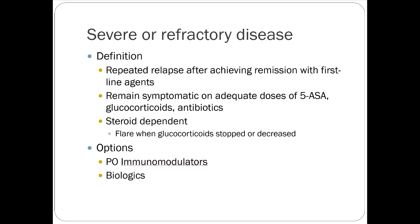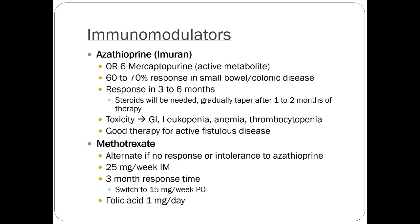Severe refractory disease is defined as repeated relapse after receiving remission with first-line agents. At that point you need to consider escalating treatment. Immunomodulators and biologics are the next tier — this sounds like a combination of transplant medicine and rheumatoid arthritis. Azathioprine was historically used — an older anti-rejection antimetabolite — not really used to start new patients anymore, but you might see older Crohn's patients stable on it.